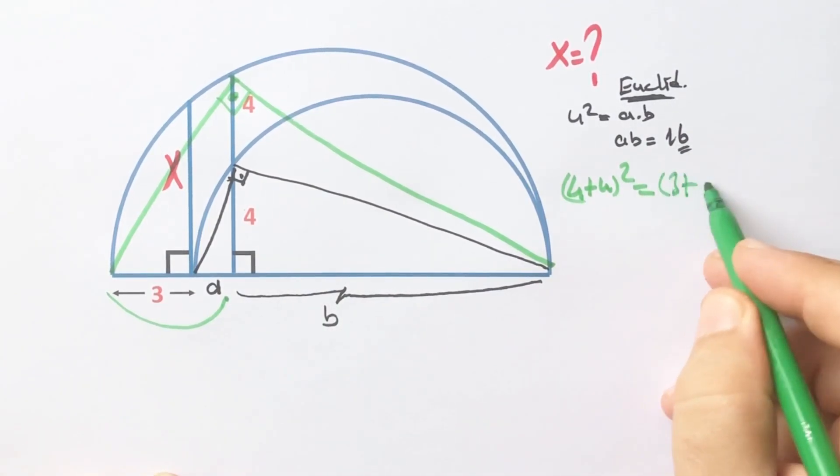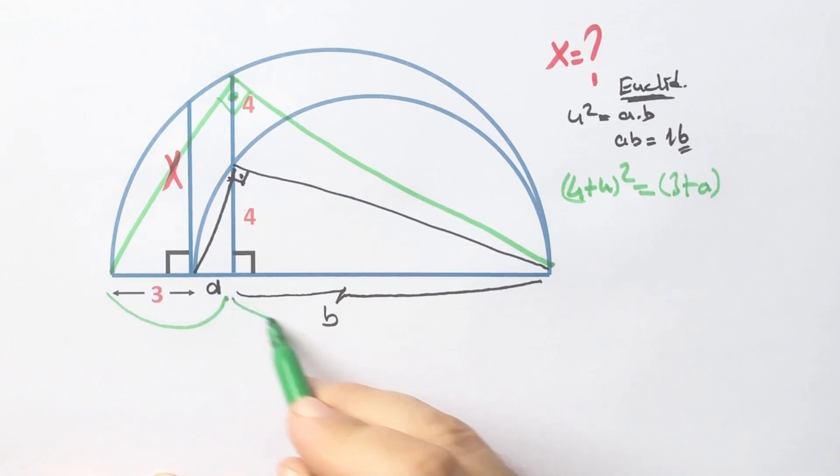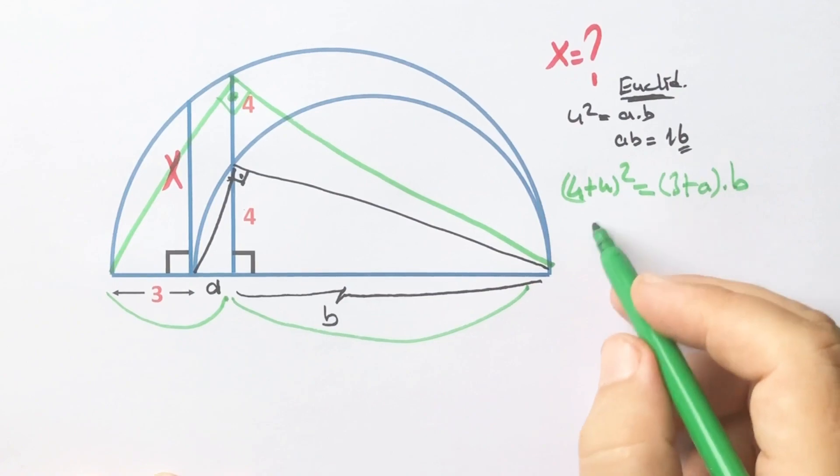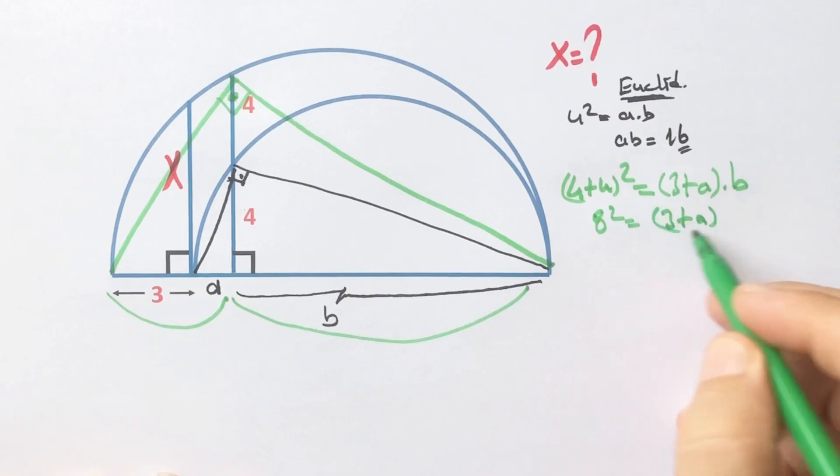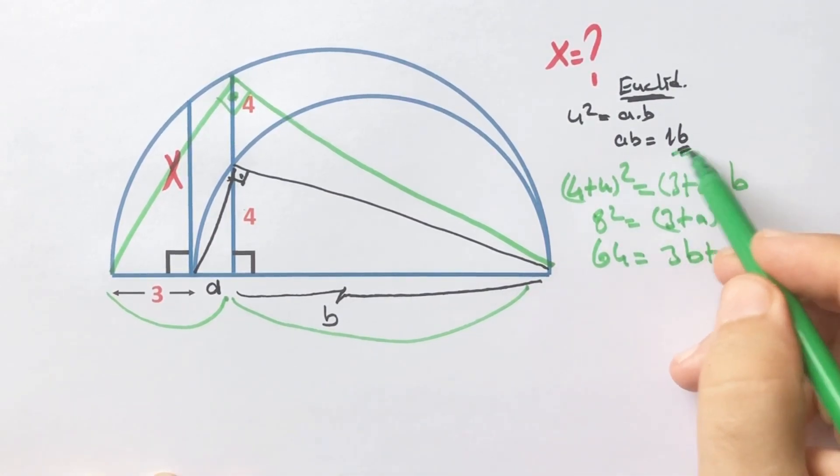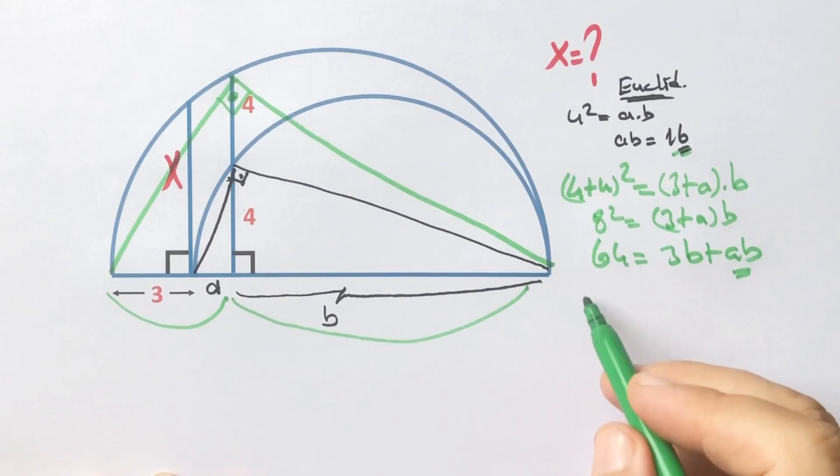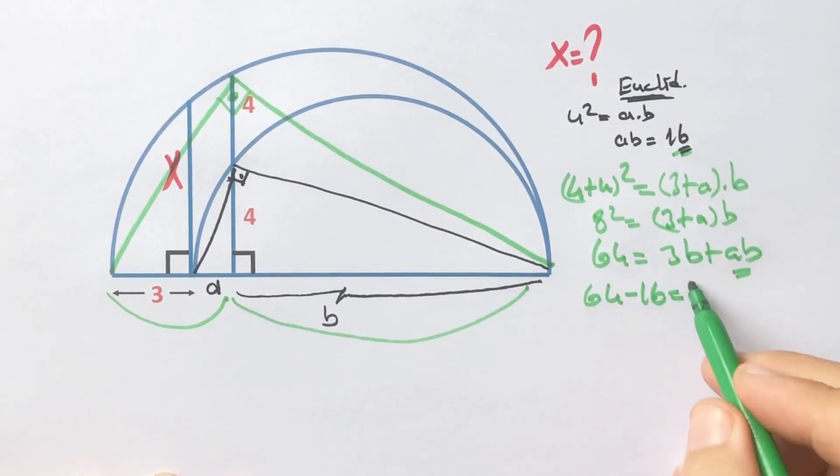Three plus a times b. So eight squared equals three plus a times b. So 64 equals 3b plus ab. We know that ab equals 16, therefore 64 minus 16 equals 3b. So b equals 16 units.